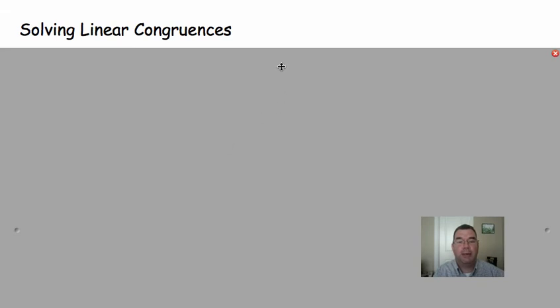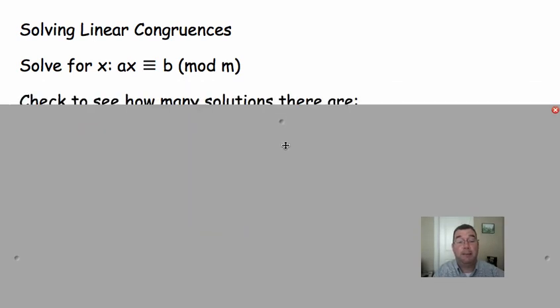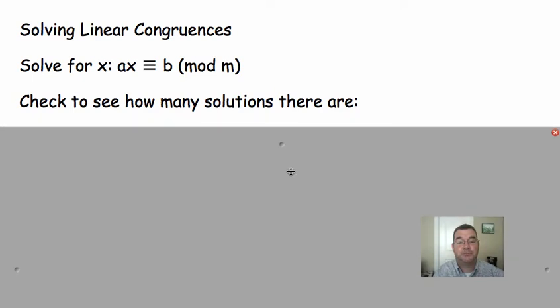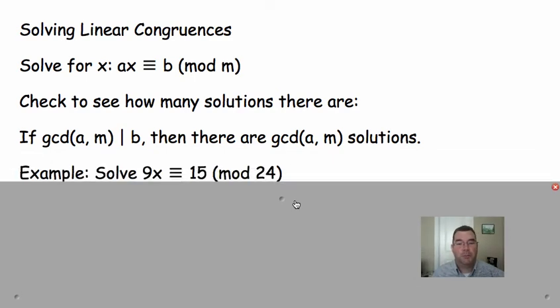Now, we get into what would happen if I had an equation like this. Some integer times x is congruent to some other integer mod m. That's what they always look like. They'll have an x in them and you'll be expected to solve them. So, the first thing we're going to do is we're going to check and see how many solutions there are. Pay attention to this because this is kind of tricky. If you look at the GCD of this number in front and this number at the end. So, always look at the beginning and the end and find the GCD of that. If that GCD is a factor of B, then there will be however many solutions there are when I talk about the GCD. Kind of hard to express that in words. So, I'm just going to give you an example.